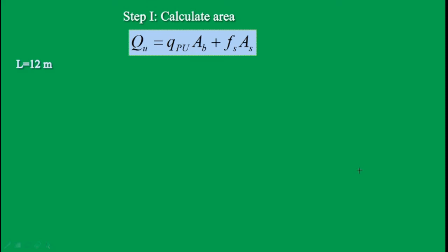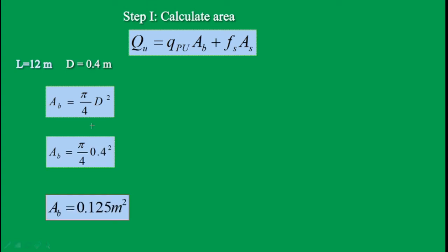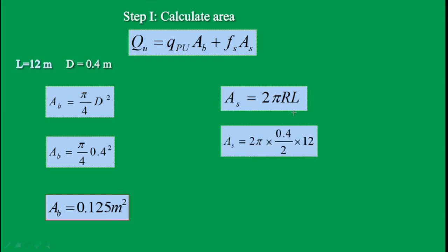Step 1: calculation of areas. Length is 12 meters, diameter d is 0.4 meters. Ab is the point bearing area; as it is a circular pile, Ab = π/4 × d². Calculating that gives Ab = 0.125 m². As is the surface area of the cylinder, with formula 2πrl where r = d/2 = 0.2 m. Putting that into the equation gives As = 15.08 m². Step 1 is complete.